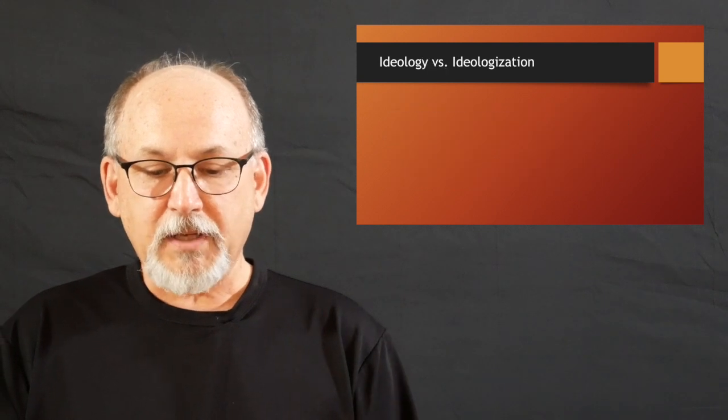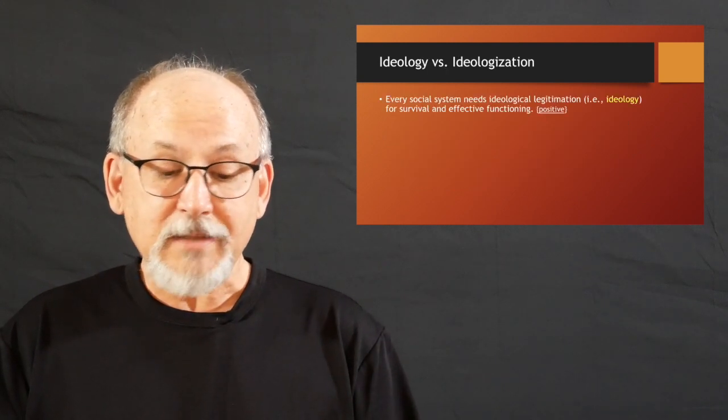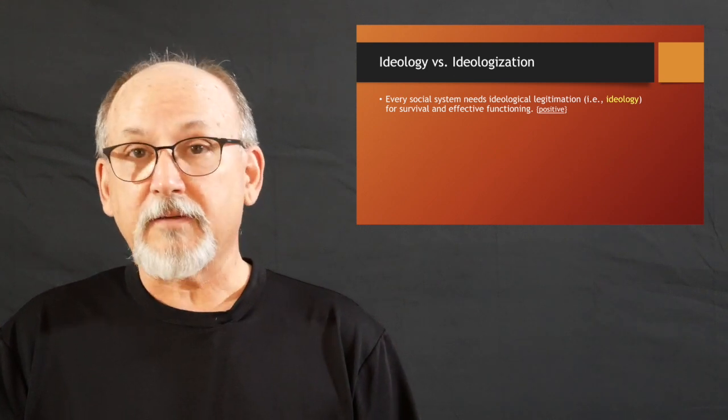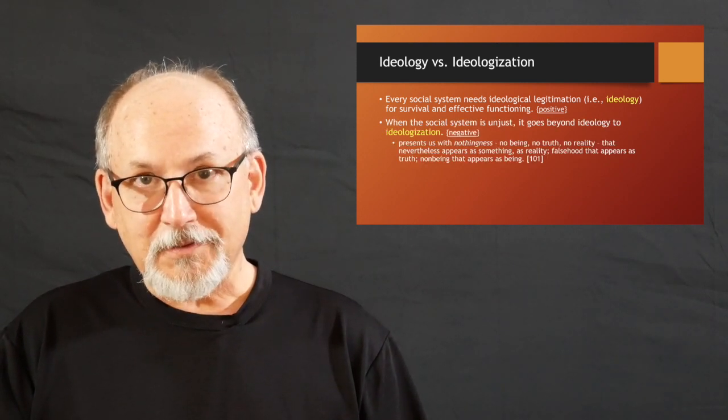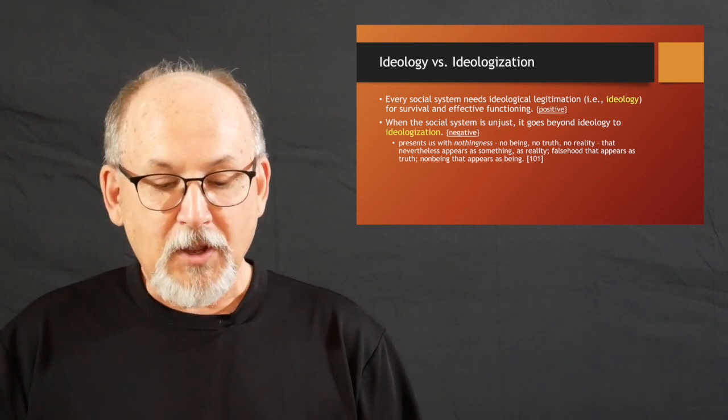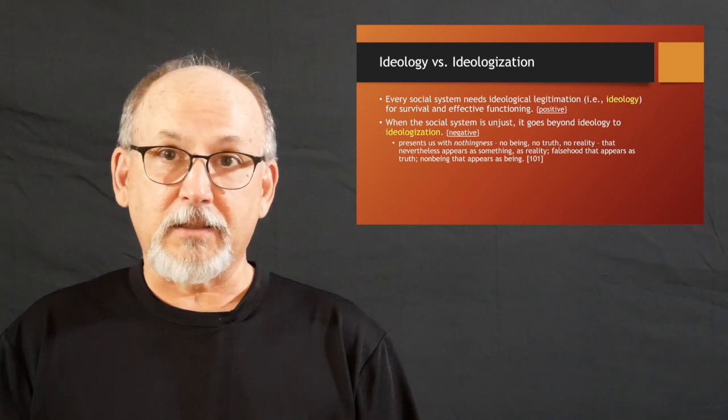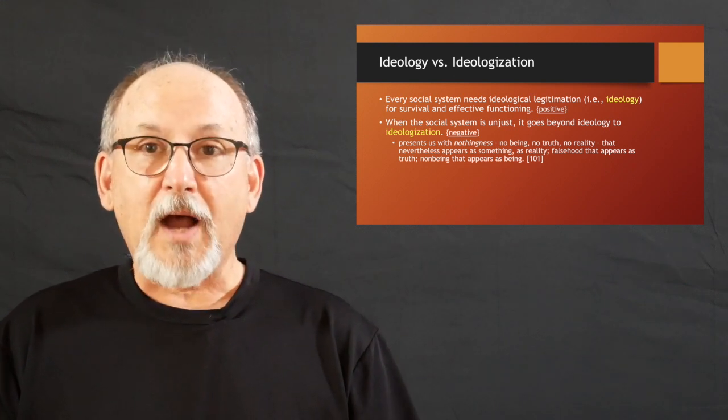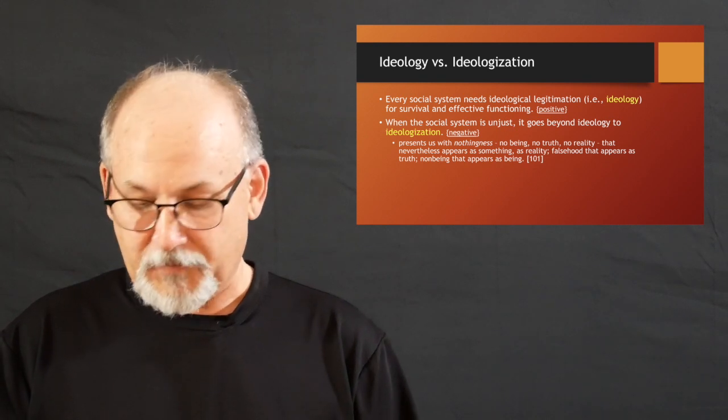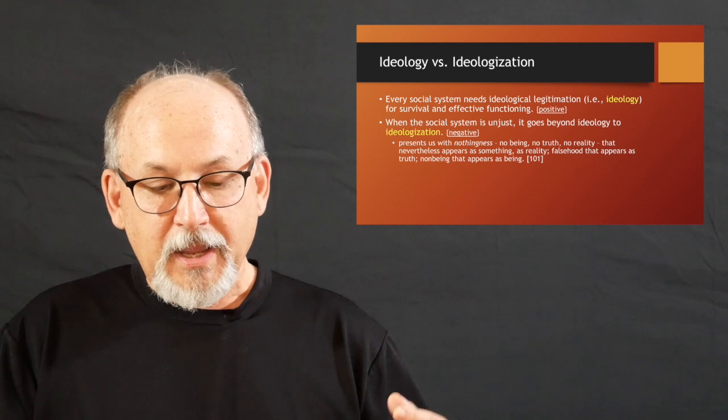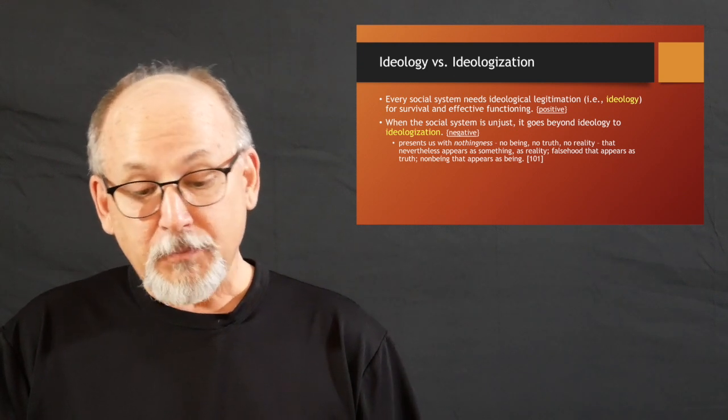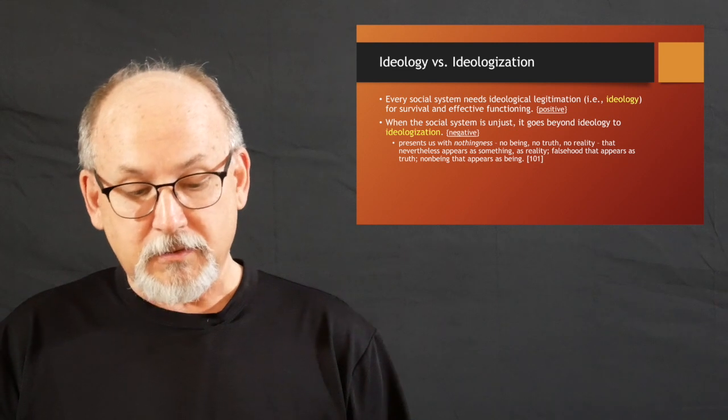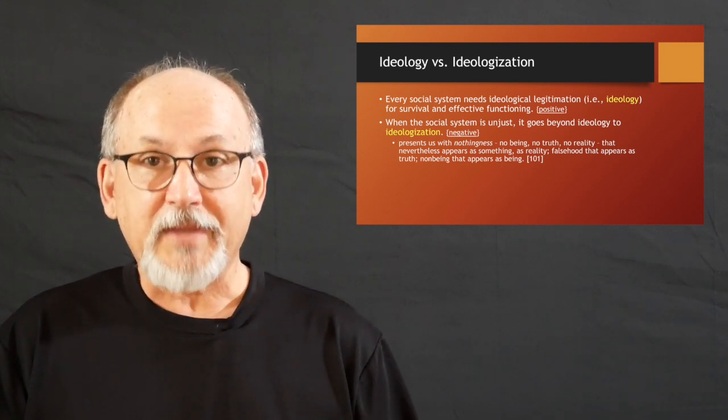So, every social system, again, needs ideological legitimation, needs ideology as such for survival and effective functioning. That's the positive aspect of ideology. Ideologization is the negative here. This is how he's using it in this stage of the essay. When the social system is unjust, it goes beyond ideology, what we need in order to see things, to ideologization. You can hear that he's using it just negative at this part of the essay. It presents us, he says, with nothingness, no being, no truth, no reality, that nevertheless appears as something, appears as reality. Falsehood that appears as truth, non-being that appears as being. That's this negative view of ideology or what he's calling here ideologization.